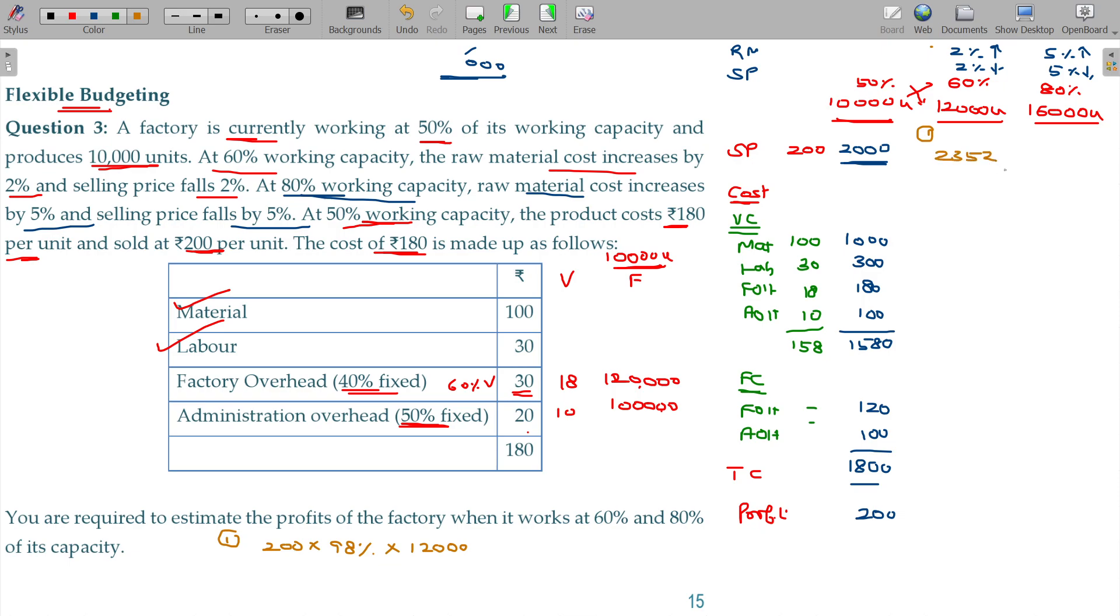2352 thousands, three zeros. And variable cost, material value 2% increase. In this calculation, it can be 100 rupees increased by 2%, 102 rupees, into 12,000. 1224.